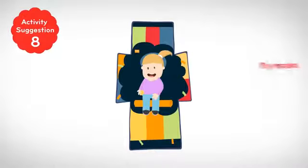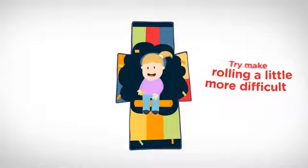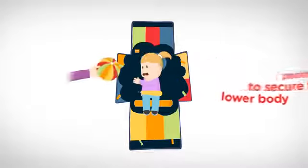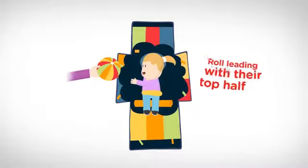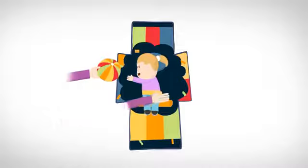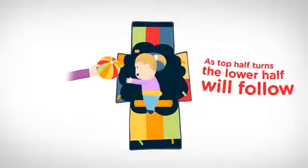I try and make rolling a little bit more difficult by using the positioning strap to secure the lower part of her body. I then encourage Charlotte to roll leading with the top half. I position the toys just slightly out of her reach, so as the top half turns, it allows her lower half to follow.